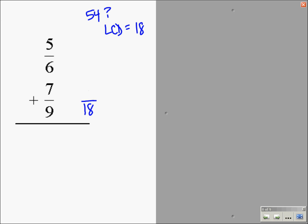So I need an 18 here and an 18 here. I need to figure out what my fractions of 1 will be. 6 times what will give me 18? It will be 3. So this fraction of 1 will be 3/3. Down here, 9 times what gives me 18? It's 2. So my fraction of 1 will be 2/2.